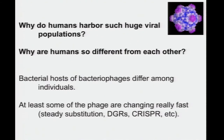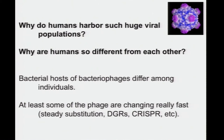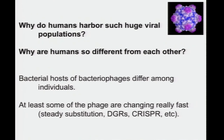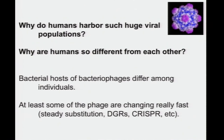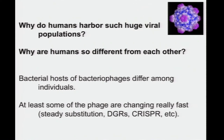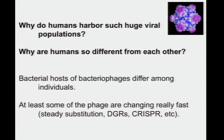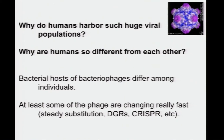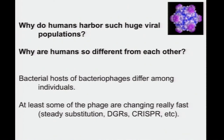Circling back — why do humans harbor such huge viral populations, and why are humans so different from each other? One of the most central messages from microbiome studies is that humans have very different colonizing microbes — a great deal of individual variation. Naturally, the phages predating on those microbes are likely to be different also. But something we can add from this study is that at least some phages seem to be changing really, really fast. So when a virus colonizes a human, it diversifies pretty quickly, and over the lifetime of an individual, there'll be a lot of diversification. The phage populations do seem to be pretty stable, so this rapid change may be another piece helping to explain why human viral populations look so different from each other.